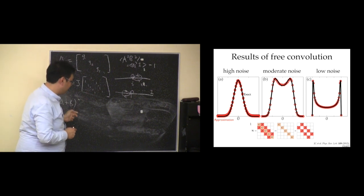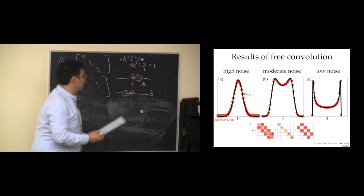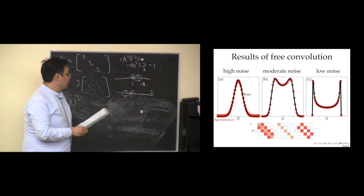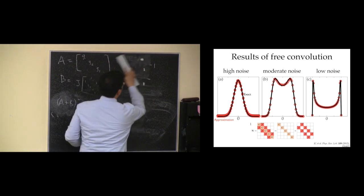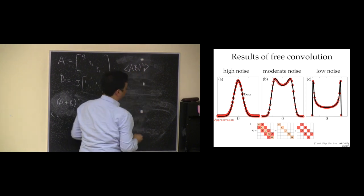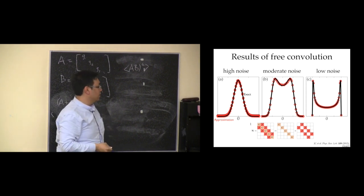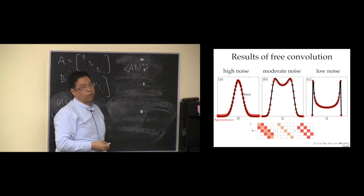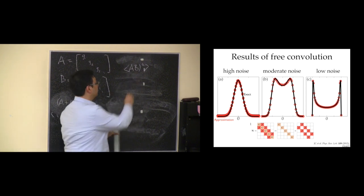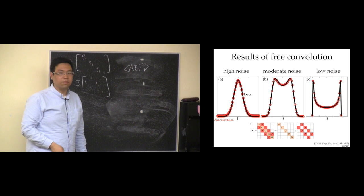It turns out this was a somewhat unusual result even for the free probability people, because A squared B squared and A B A B were the same for this matrix. The deviation turned out to appear in the term that looks like (AB)^4. This was a somewhat unexpected result, because people thought if it differs in the fourth moment then you get free probability, and if you don't then it's exact. But in this case it's the eighth moment that contains the particular deviation. This was the result we showed in the paper.